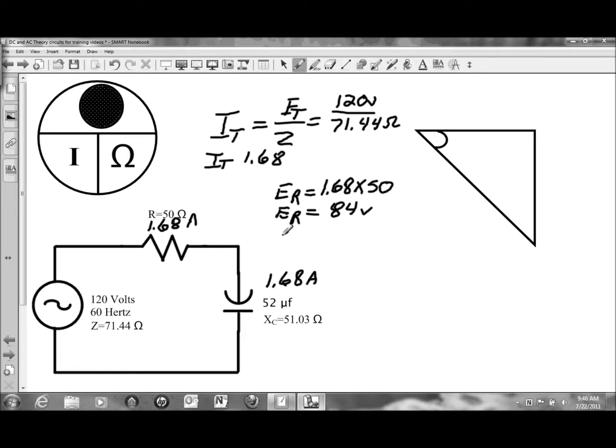And we can apply Ohm's Law a second time to find the voltage drop on the capacitor, EC. 1.68 amps of current flow times the value of capacitive reactance, 51.03 ohms of capacitive reactance. And the voltage drop on the capacitor, 85.73 volts dropped.